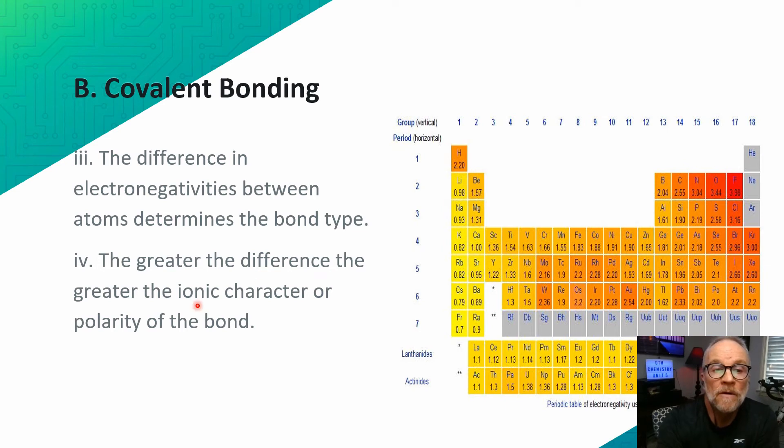The greater the difference, the greater the ionic character or polarity of the bond. In ionic bonds, we say those are highly polar. You've got a definite positive and negative pole. If the difference is kind of in between, you get an unequal sharing of electrons. So you have a partial positive end and a partial negative end of the bond. If the difference is super small, then it's a non-polar bond in which the electrons are essentially shared equally.